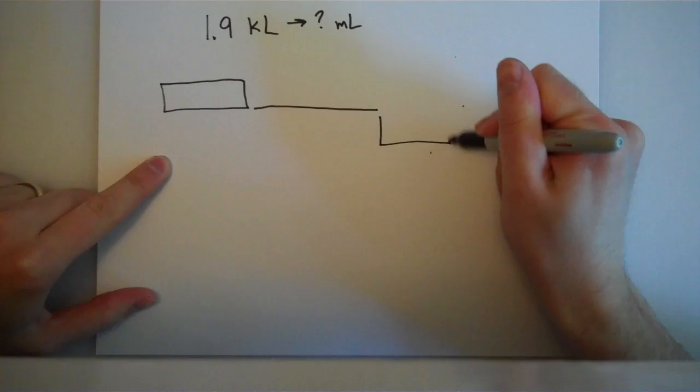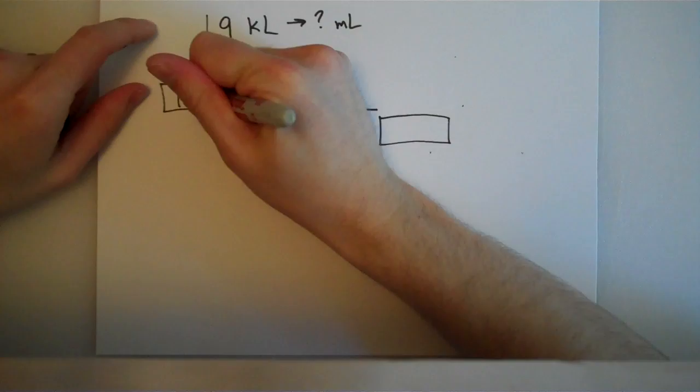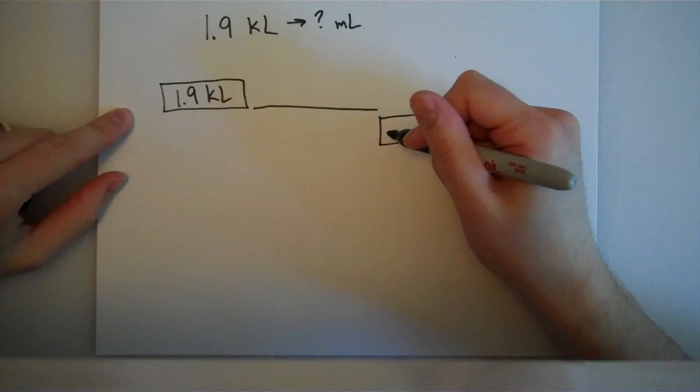I put a box in the top left. That's where my number goes. 1.9, and I have to attach the unit. 1.9 kiloliters goes in the top left-hand corner. On the bottom right, I'm going to put my question mark milliliters.